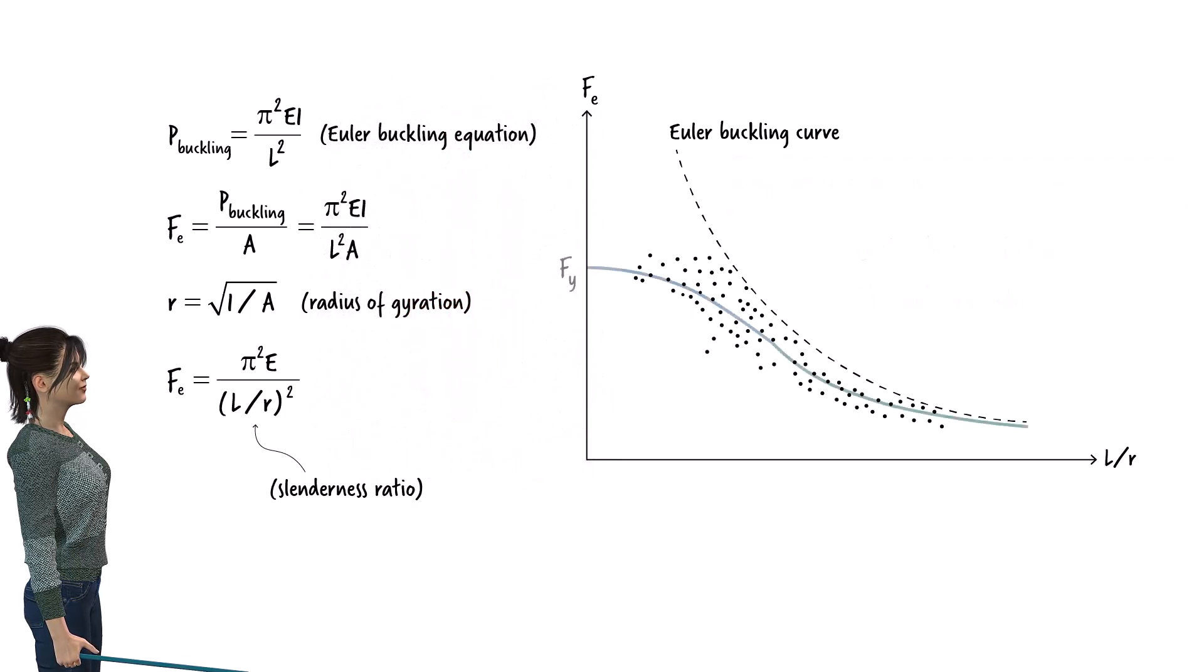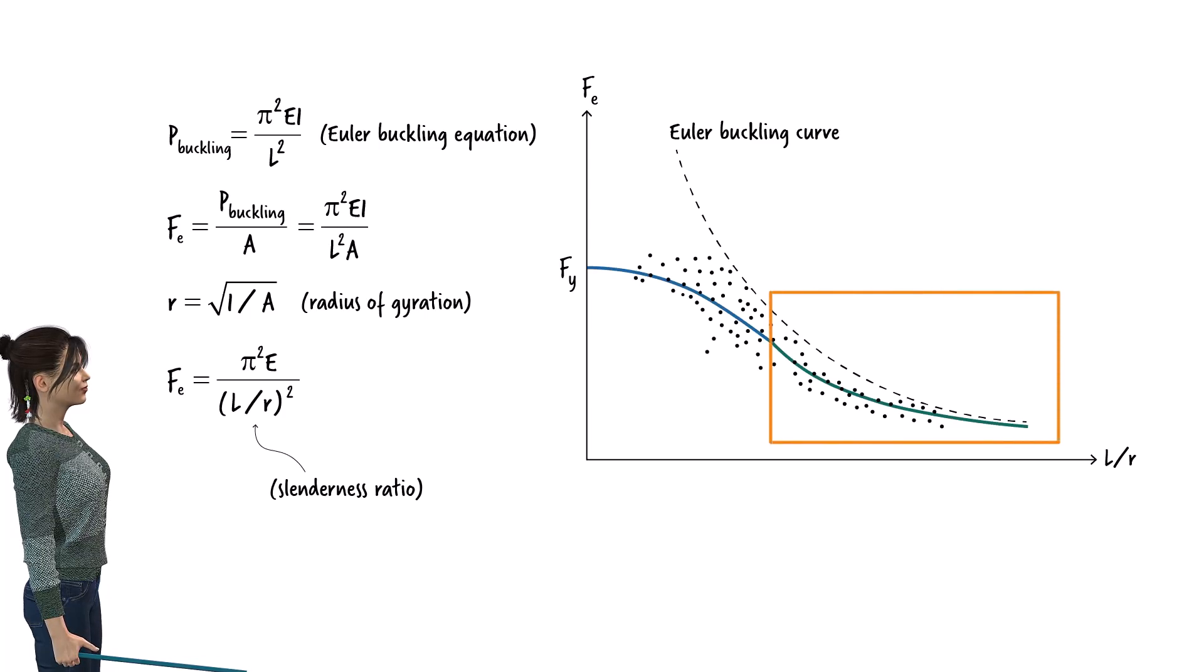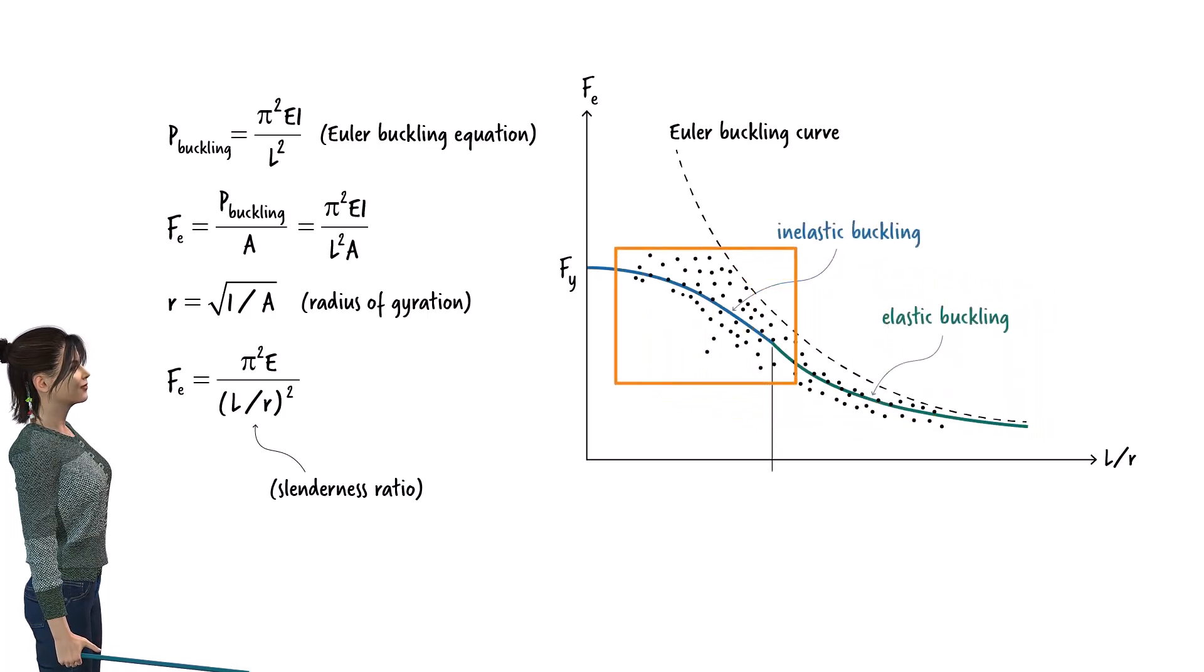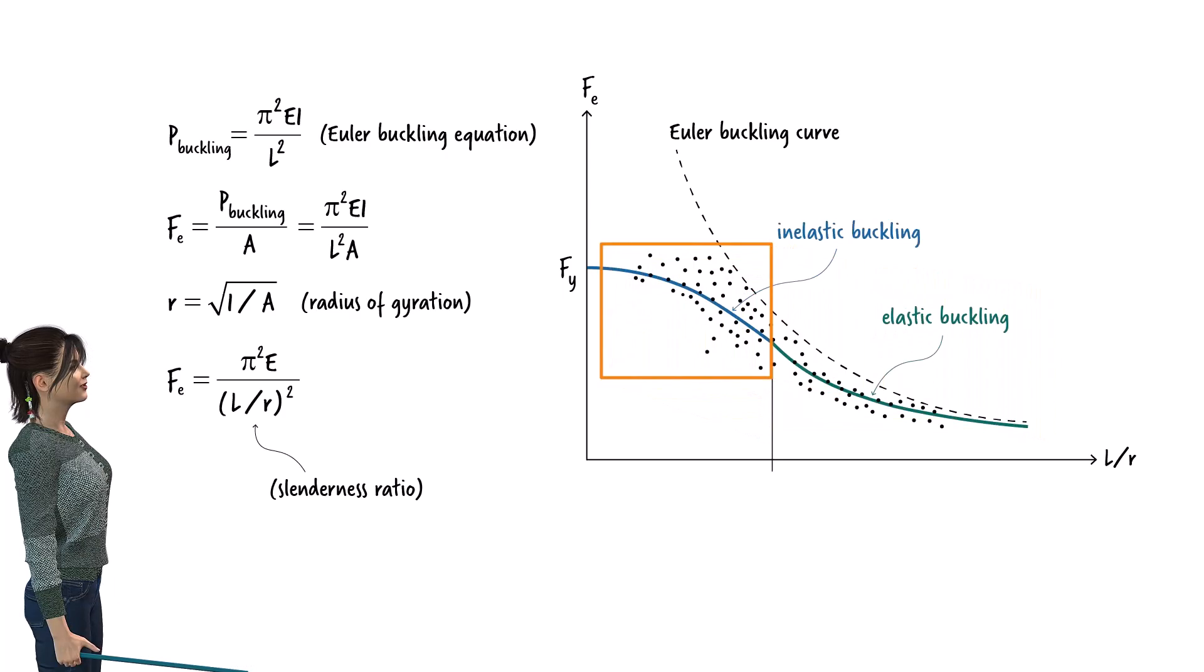The AISC specification provides two curves for determining the buckling strength of compression members. In this region, the material is assumed to behave elastically. However, in this region, we assume inelastic behavior due to the significance of the residual stress.